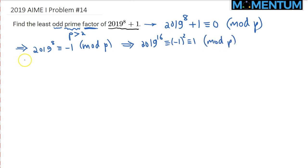That would imply that the order of 2019 modulo P divides 16. But wait, at the same time we know that it cannot be 8 as well, because 2019 raised to the 8th power is just minus 1. So really, the order of 2019 modulo P has got to be 16 itself.